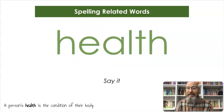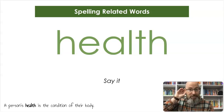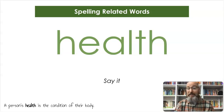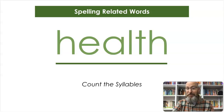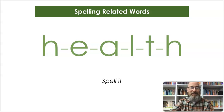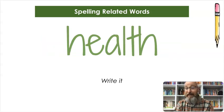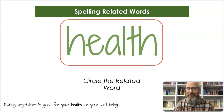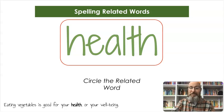Our next word is health. A person's health is the condition of their body. Count the syllables — health. Another one with just one. Let's spell it: H-E-A-L-T-H, health. And let's write it: H-E-A-L-T-H. And let's circle that entire word again. Eating vegetables is good for your health, or your well-being. Those could be synonymous.